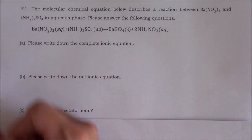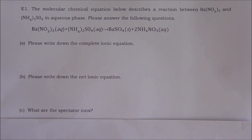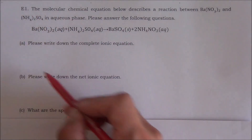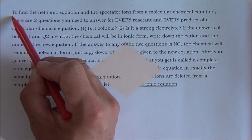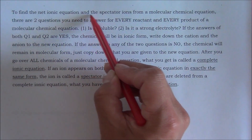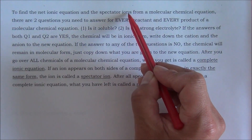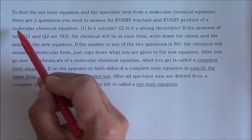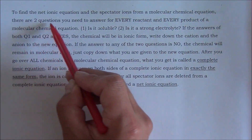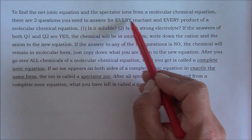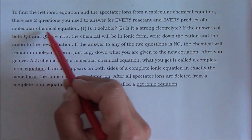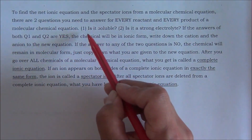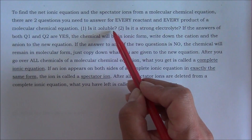Before we answer these problems, let's review some basics about the complete ion equation, the net ion equation, and the spectator ions. To find the net ion equation and the spectator ions from a molecular chemical equation, there are two questions you need to answer for every reactant and every product. Question number one: Is it soluble?